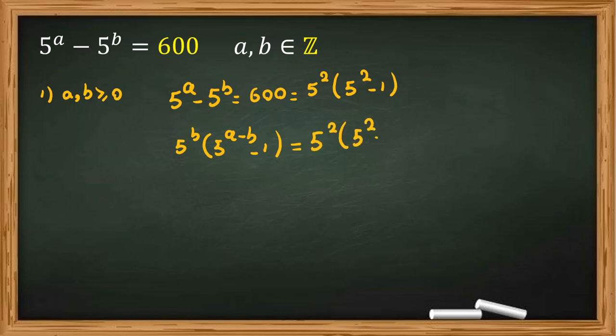And this form is unique. So we conclude this part equal to this part, this part equal to this part. We conclude B equal to 2 and A minus B also equal to 2. So A minus 2 equal to 2, A equal to 4. This is our first answer.